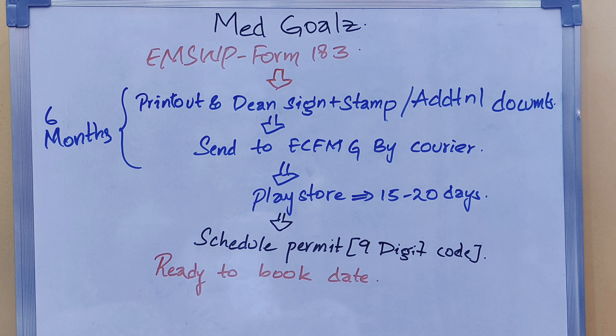Send the completed Form 183 to ECFMG by courier. This whole process takes up to about 6 months. For people who have other documents, they can download the app from the Play Store and send documents online, and that process takes about 15 to 20 days.